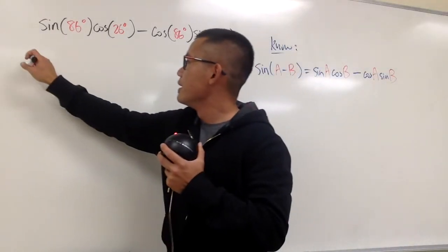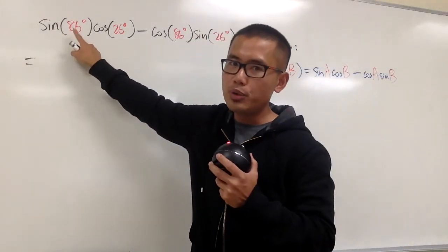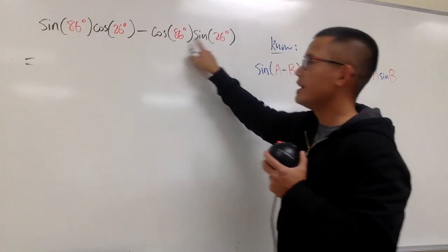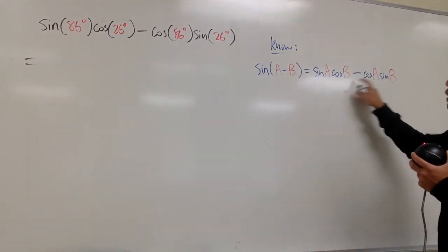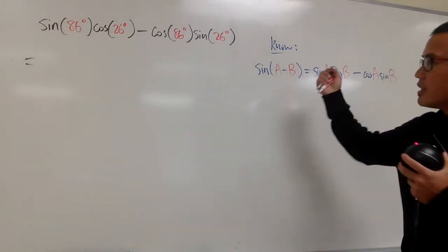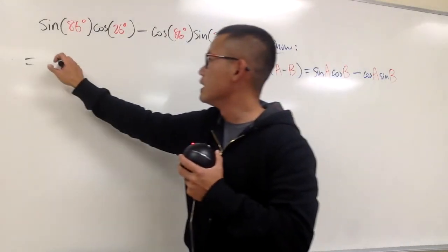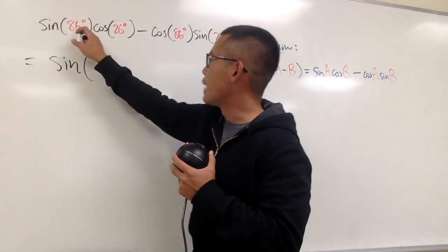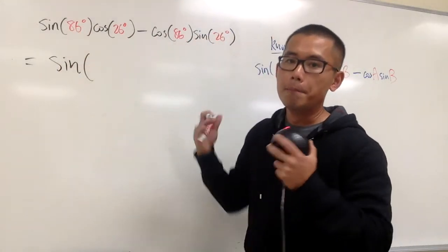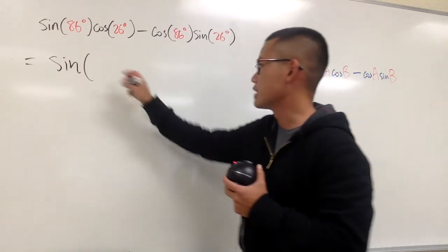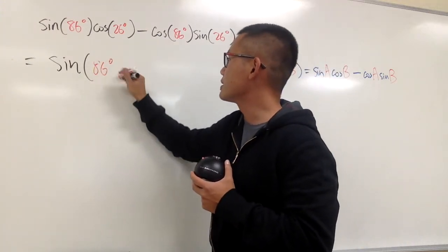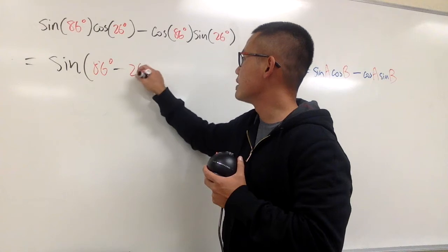So this right here, as you can see, will be your A and B. The angles are right here, so together we'll end up with just a sine, and then we'll have 86 degrees minus 26 degrees. So let's put that down: 86 degrees minus 26 degrees.